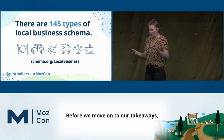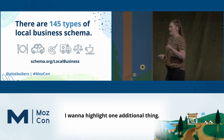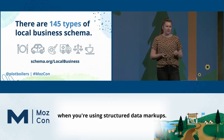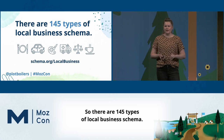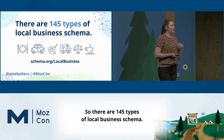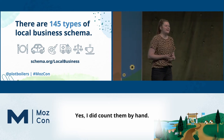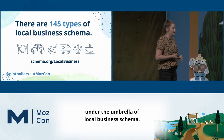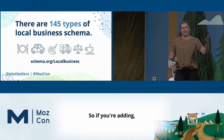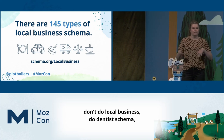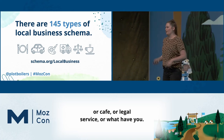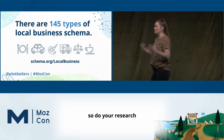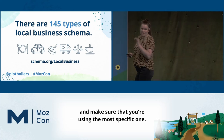Before we move on to takeaways, I want to highlight one additional thing: be as specific as possible when using structured data markups. There are 145 types of local business schema — yes, I counted them by hand. This is 145 specific types of businesses under the umbrella of local business schema. So if you're adding schema for a dentist, don't do local business — do dentist schema, or cafe, or legal service. Do your research and make sure you're using the most specific type available.